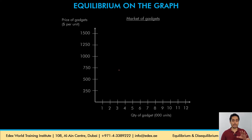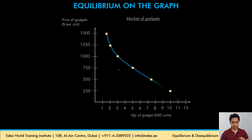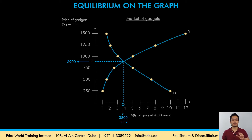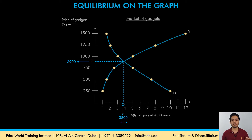Plotting price on the y-axis and quantity of gadgets on the x-axis, we have a downward sloping demand curve and an upward sloping supply curve. The demand curve and the supply curve intersect at a point where the price is $900 and the quantity demanded and supplied is 3,800 units. It means whenever the price in the market is $900, producers will supply 3,800 units, consumers will demand 3,800 units, there will be balance in the market, and the market will stay in equilibrium.